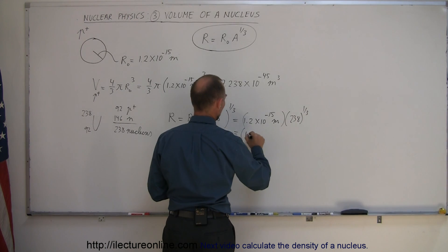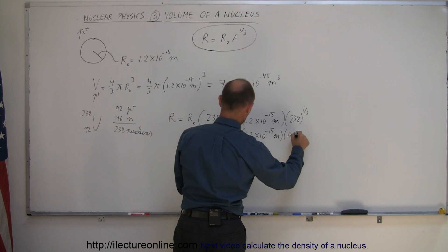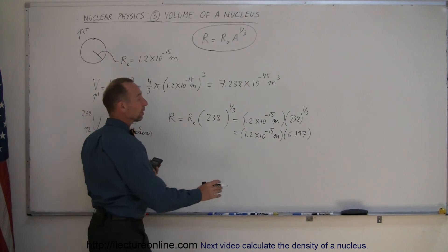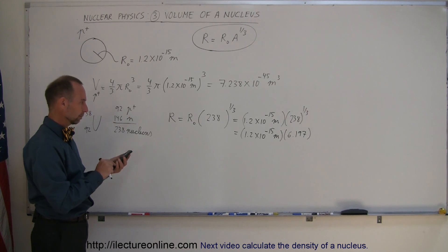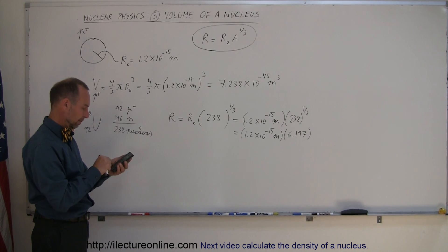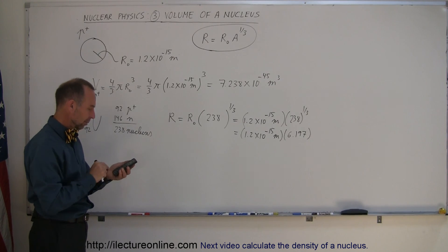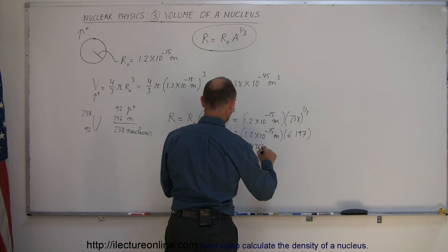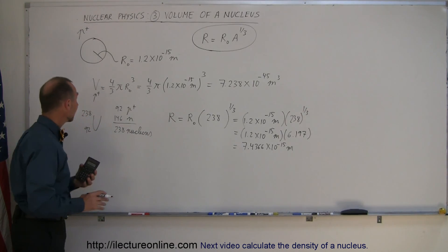So: 1.2×10⁻¹⁵ meters times — 238 raised to the one-third power equals 6.197. This means the radius of a uranium nucleus is a little more than 6 times the radius of a single proton. 238^(1/3) equals 6.197, multiply that times 1.2×10⁻¹⁵, and we get a radius of 7.4366×10⁻¹⁵ meters. That's the radius of a uranium nucleus.